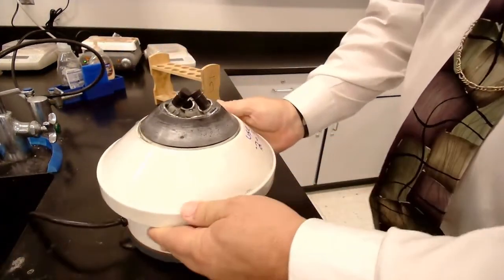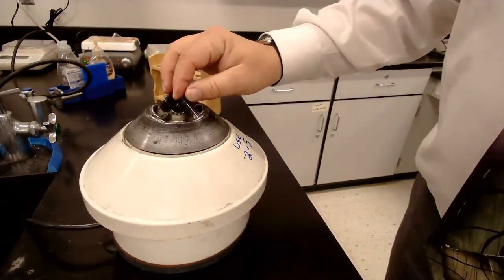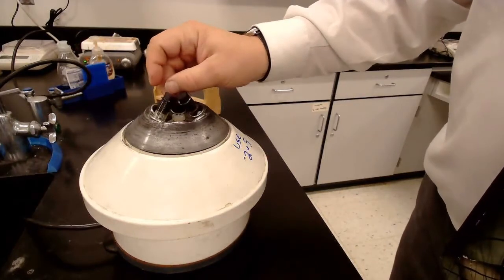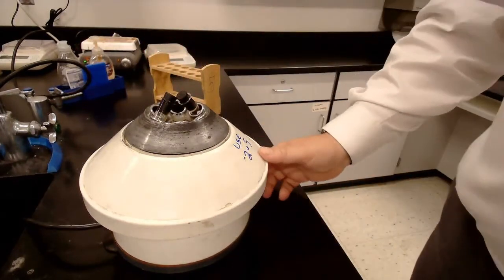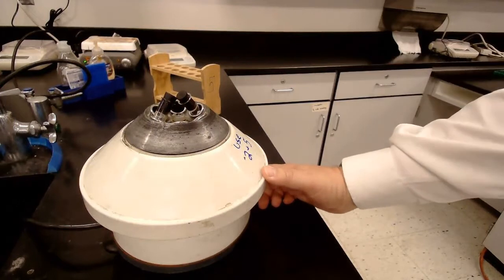Now, I have to use two tubes because I have to keep the centrifuge balanced. If you just put it on one side, it'll actually stop wobbling back and forth. If this is balanced properly, it shouldn't move.